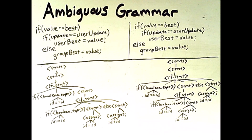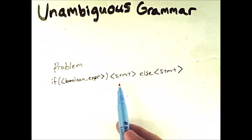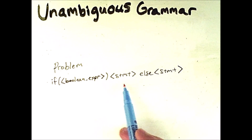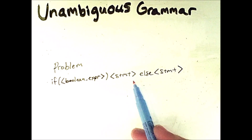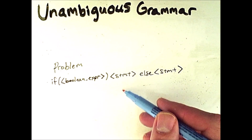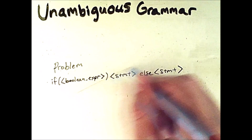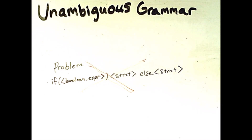If a compiler cannot uniquely determine the structure of the code, it will not know what machine code to convert the high-level code into. So let's fix our previous grammar to make it unambiguous. The big problem was that an if-else statement could have a generic statement in both slots, allowing repeated if statements to nest deeper and deeper, which leads to ambiguity.